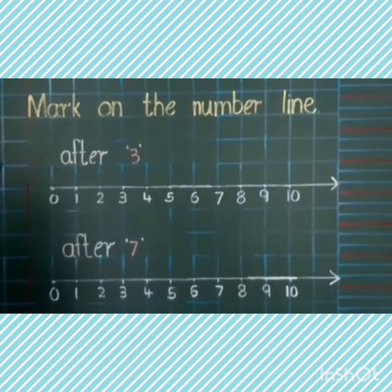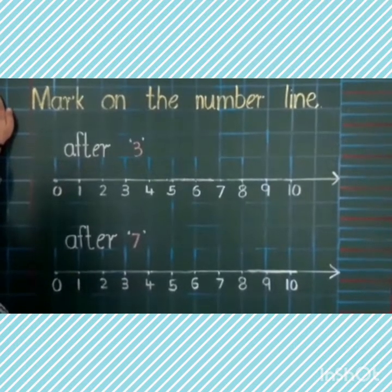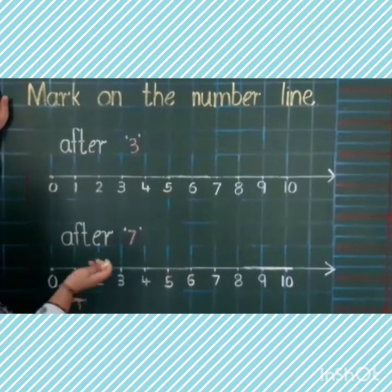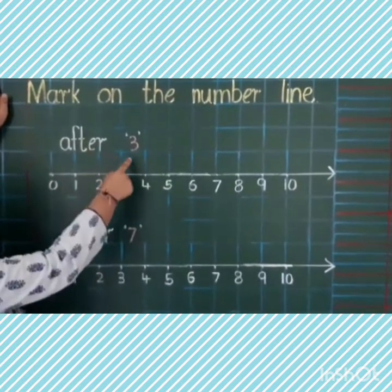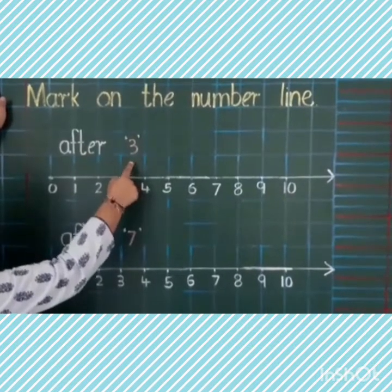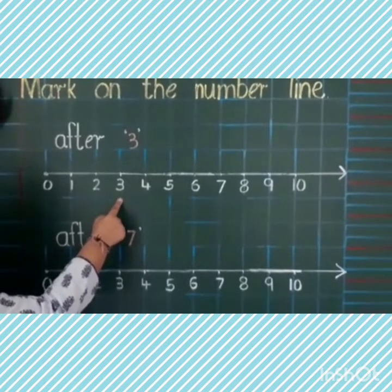Kids, we have already learnt after numbers in LKG class. And today, we will be learning how to map them on the number line. Let's start. After. Which number is this? Yes. Three. And where is three on the number line? Here. Now, tell me what comes after three?